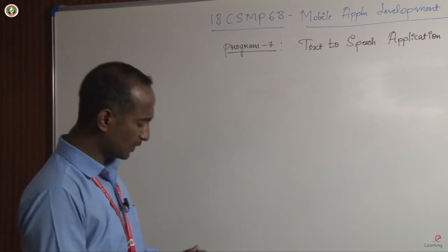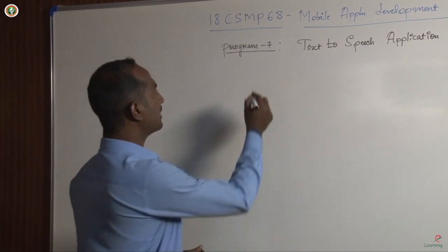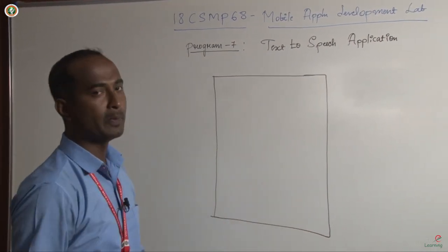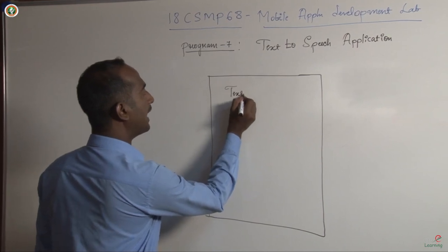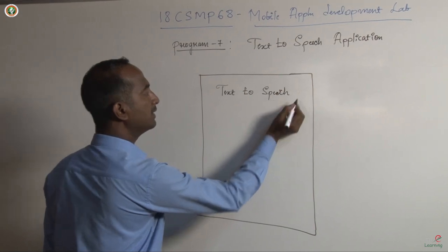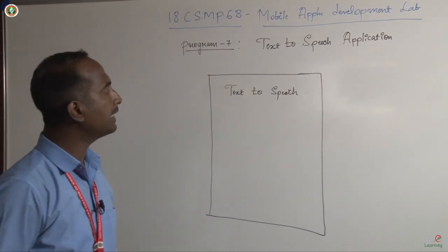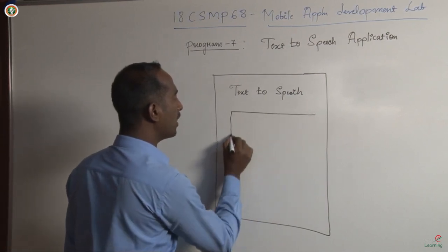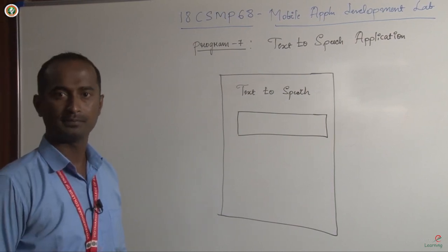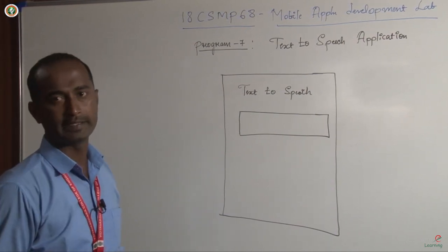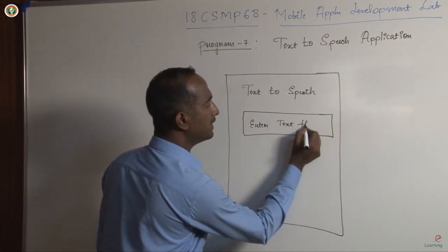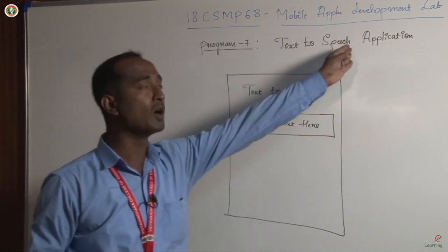Let's start with the design. The design is also very simple. Please observe this is my activity. First, I am going to mention the title of the application — that is 'Text to Speech.' I will give a title, it is not mandatory. Next, I am going to make use of a plain text to read the input from the user. I am going to give the hint to the user: 'Enter the text here,' meaning whatever text you want to convert to speech.